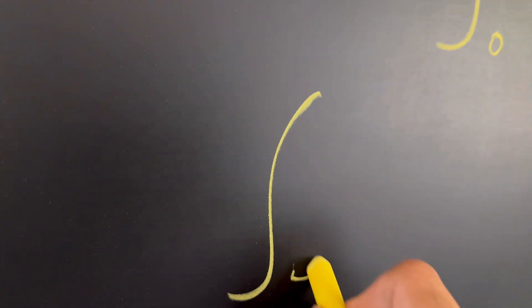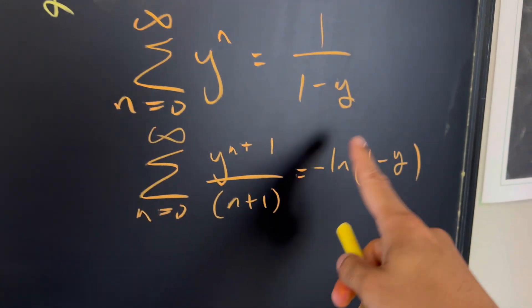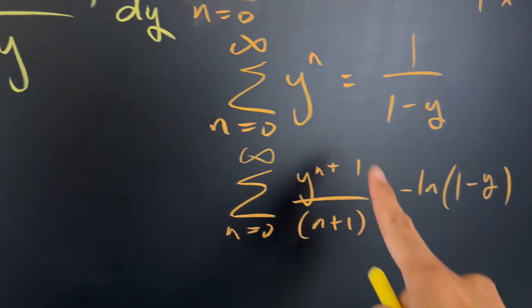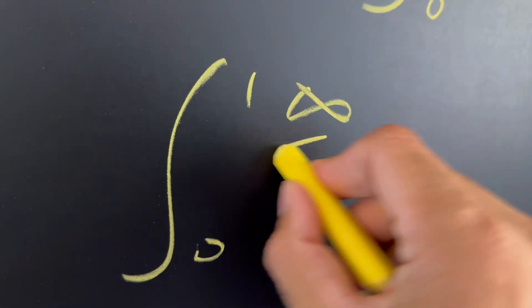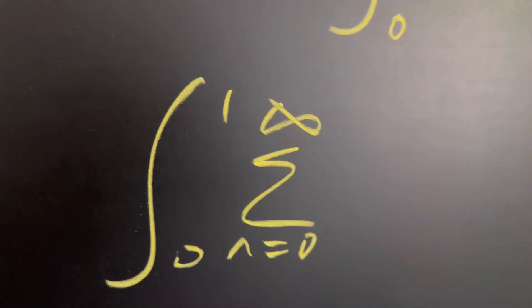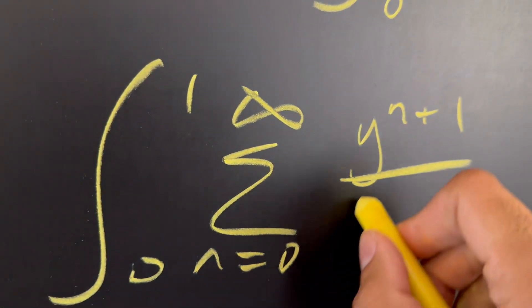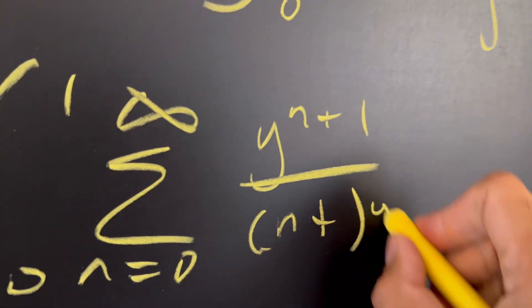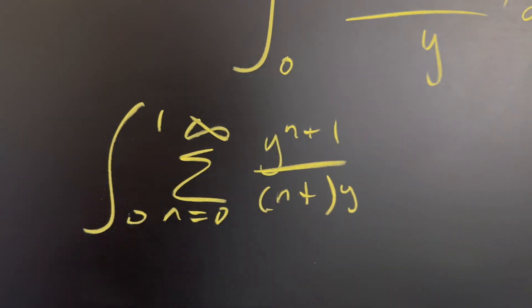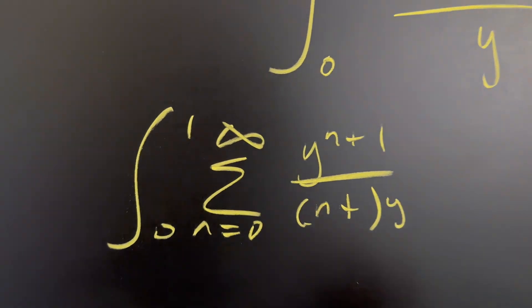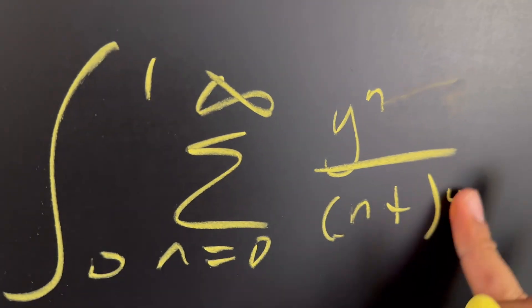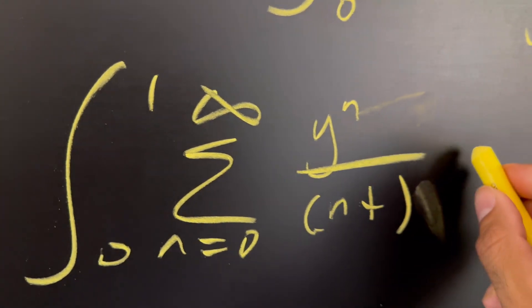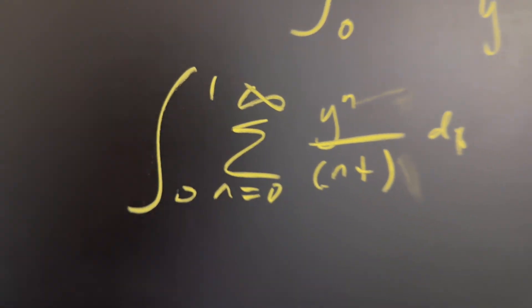Why? Because that's what we have right here. So now we can go ahead and rewrite our integral as the integral from zero to one of, instead of this, we're going to write this right here. So we have the sum from zero to infinity of y to the n plus one over n plus one. And then this is now being divided by y. We can use properties of exponents and just subtract these right here. So we'll get y to the power of n and then the y on the bottom is going to go away. So we have the dy right here.